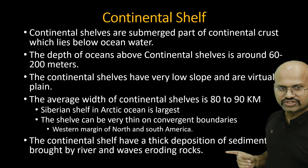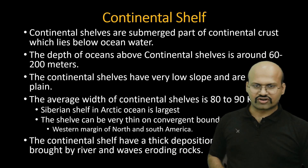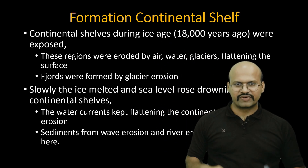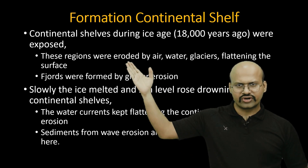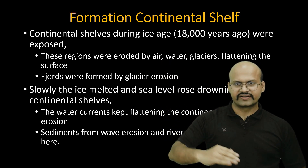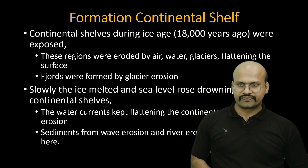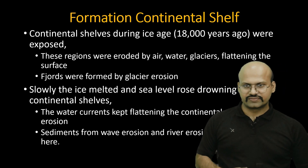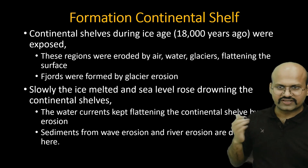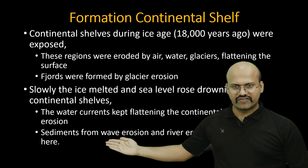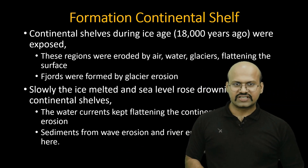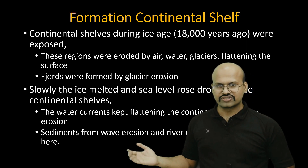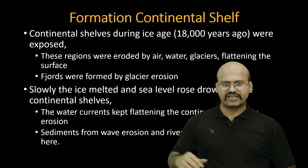The continental shelf has a thick deposition of sediments brought by rivers and wave erosion. It is believed that during the ice age, continental shelves were not submerged but were above water. These regions were eroded and flattened — some reliefs were formed by glacier erosion. After the ice age, ice melted, sea level rose, and these continental shelves were drowned. Water currents continued eroding the relief, making them flatter, while sediments from rivers and wave erosion kept depositing on them.